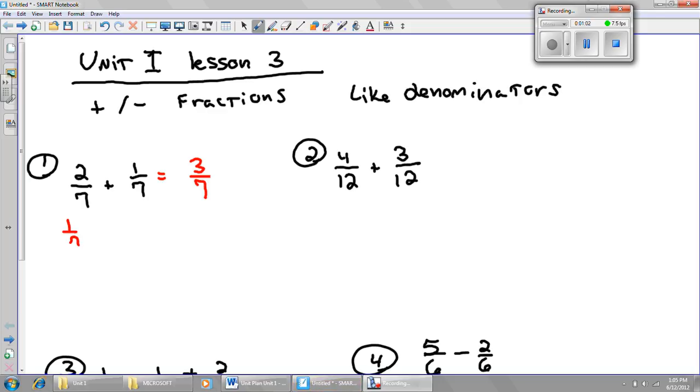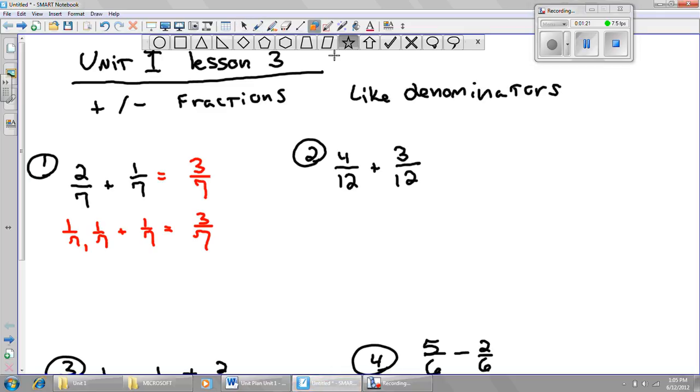So 2 sevenths could look like this. I've got 2 sevenths, and then I have one more seventh. Altogether, I have 3 of them. So, 3 sevenths. Now, by the way, very important. Notice the denominator did not change. For example, if you had 2 stars plus 1 star altogether, you would have 3 stars, right? A star didn't change. It's still stars. The sevenths doesn't change.